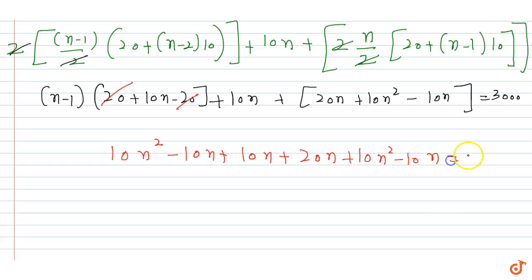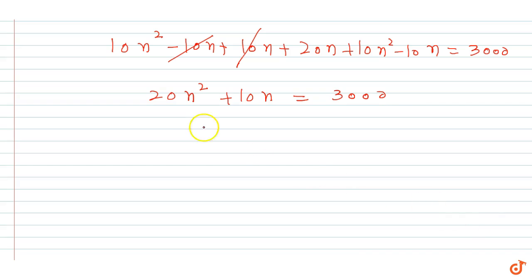This equals 3000. After simplifying, 10n cancels out, we get 20n² + 10n = 3000. Dividing by 10, we have 2n² + n - 300 = 0.